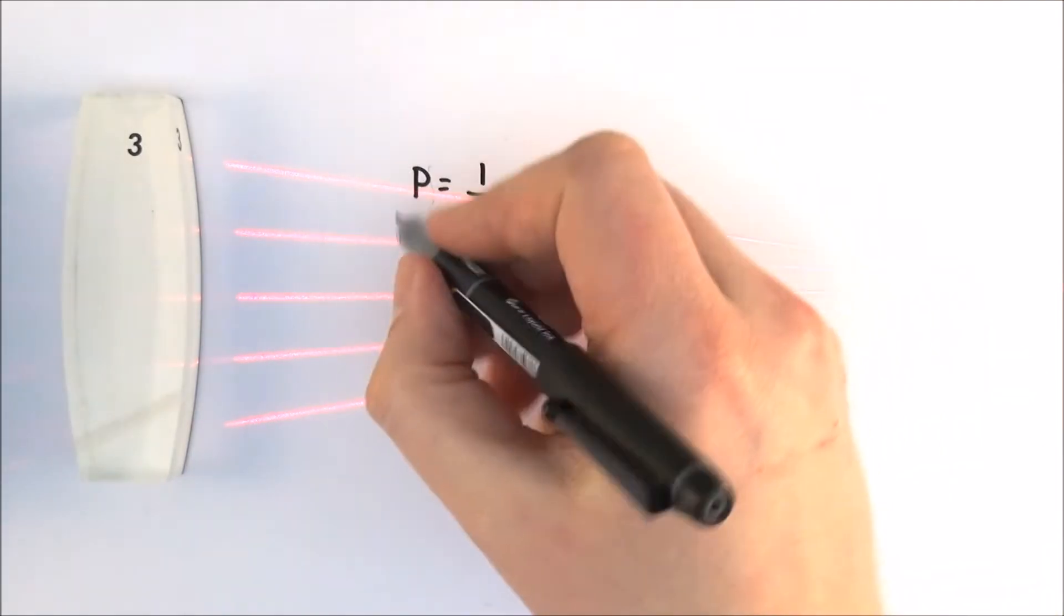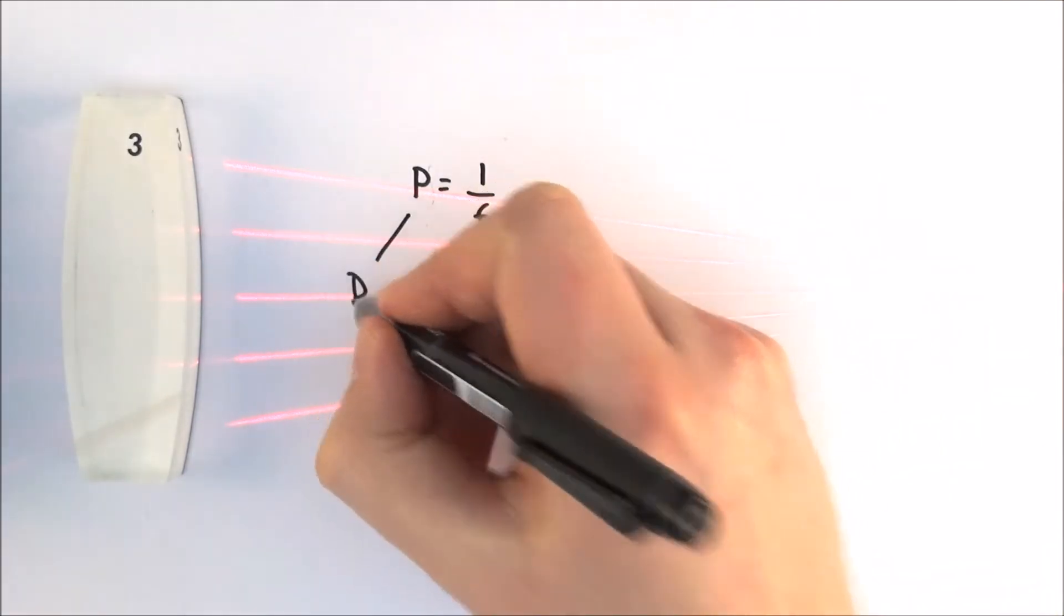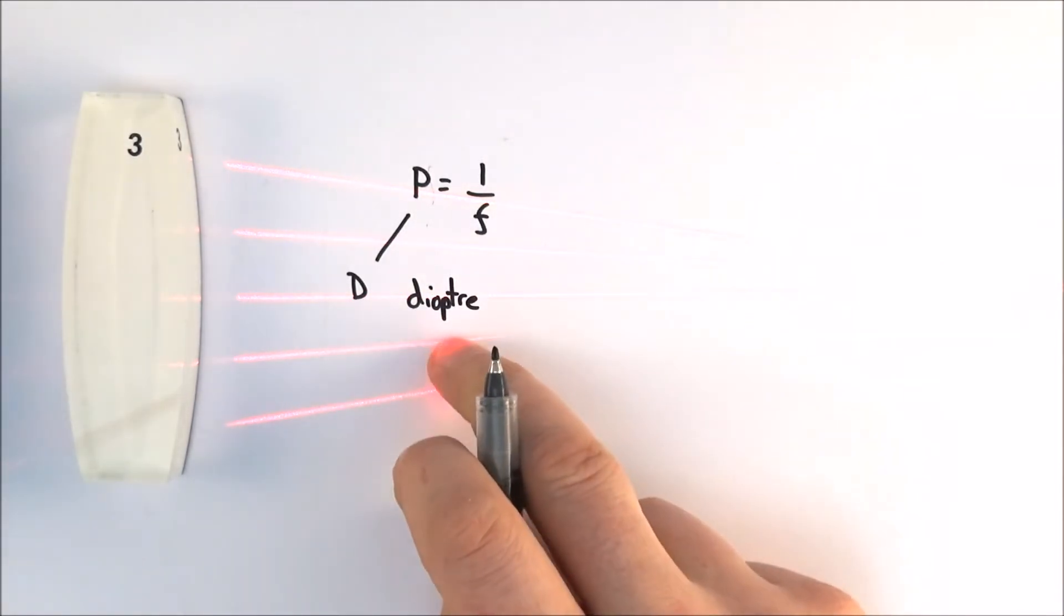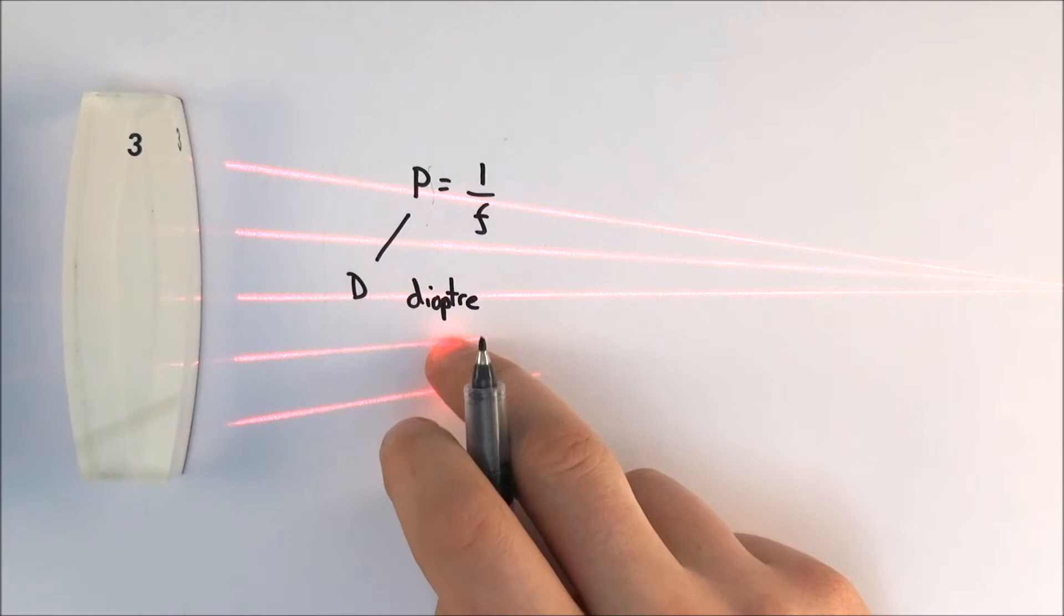The units for this are measured in diopters, and the word 'opto' is a bit like optician, so this is the unit that we measure the power of a lens in.